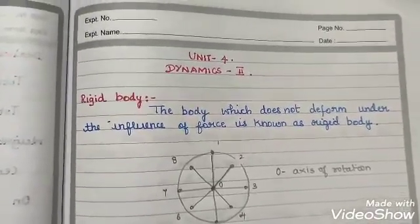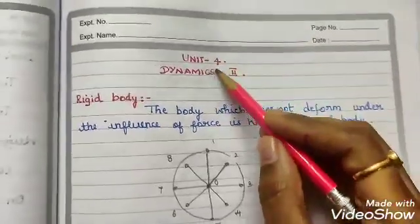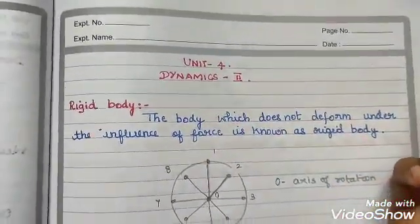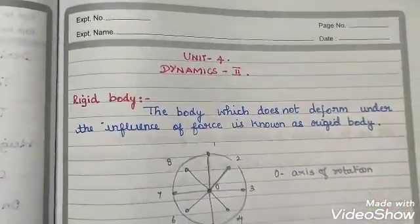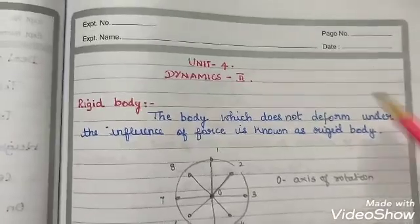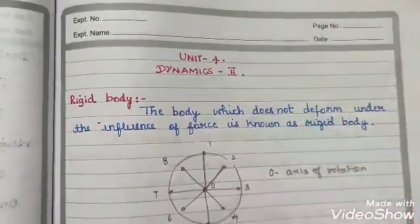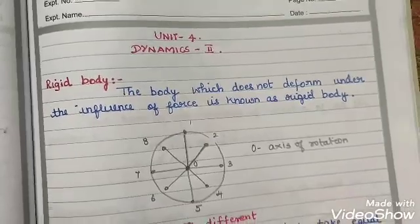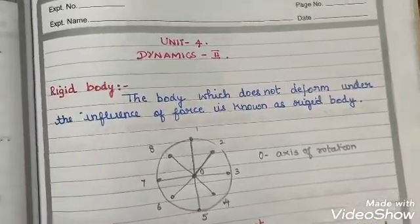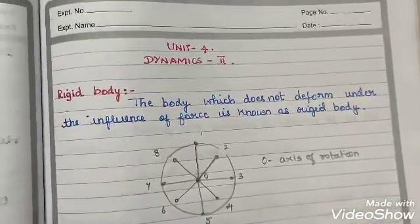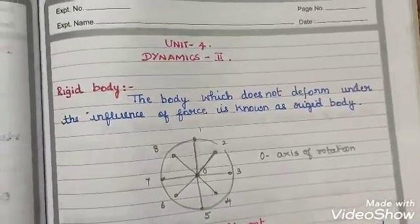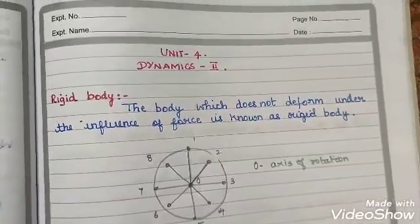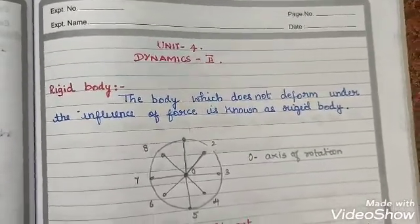Students, we are going into Unit 4 - Dynamics 2. In the previous unit we covered Dynamics 1. In Dynamics 2 we have three parts: 4.1 rigid bodies, 4.2 gravitation, and 4.3 satellites.